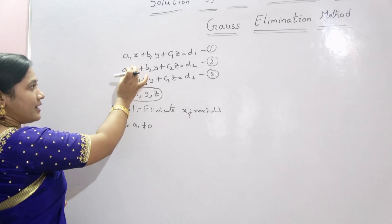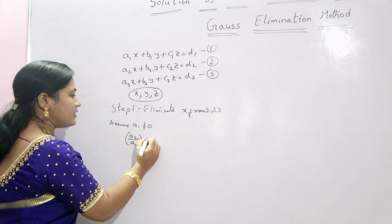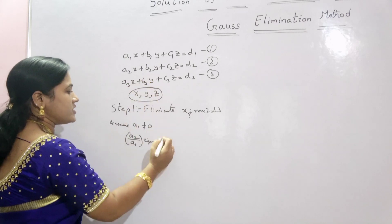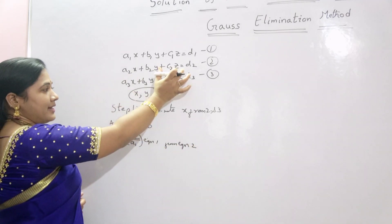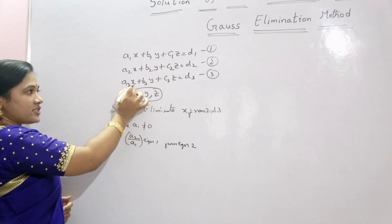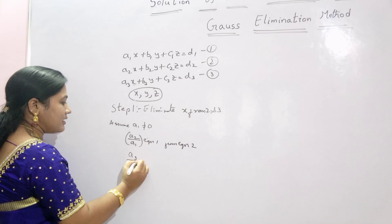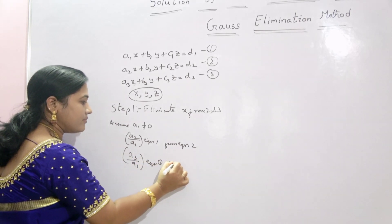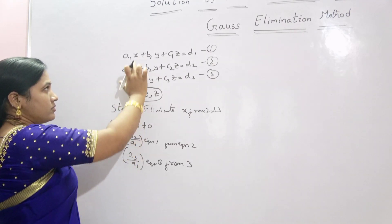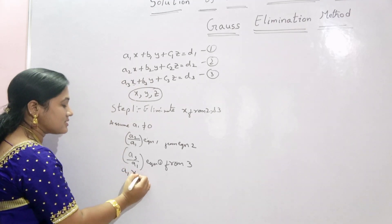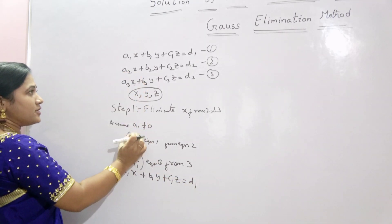For the second equation, to eliminate x, subtract a2/a1 times equation 1 from equation 2. To eliminate x from the third equation, subtract a3/a1 times the first equation from the third equation. So the first equation remains as it is: a1x + b1y + c1z = d1.